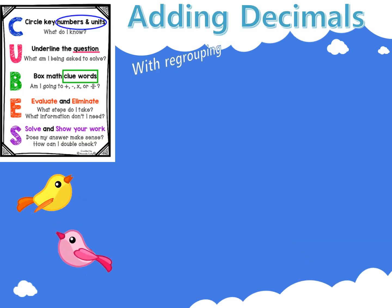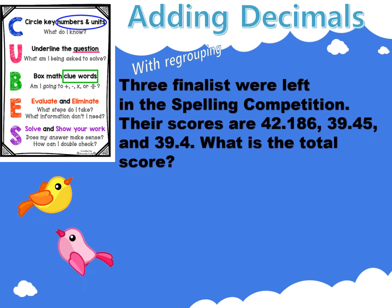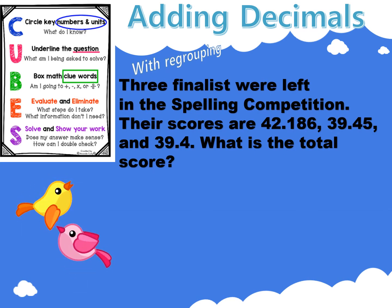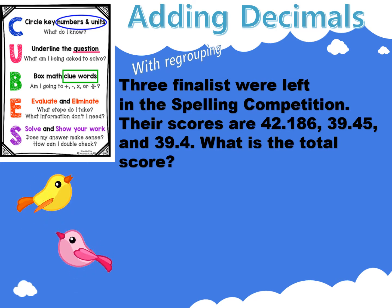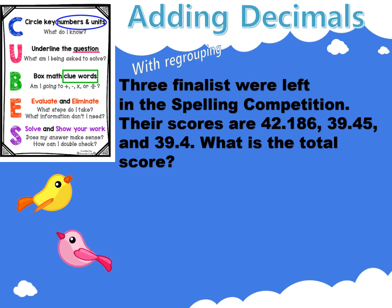Let's do another adding decimals problem, this time with regrouping. Read the problem with me. Three finalists were left in the spelling competition. Their scores are forty-two and one hundred eighty-six thousandths, thirty-nine and forty-five hundredths, and thirty-nine and four tenths. What is the total score?